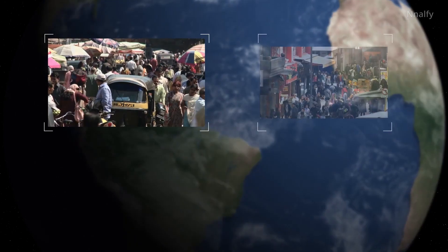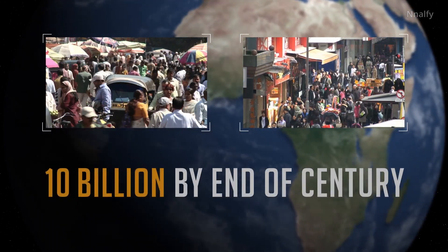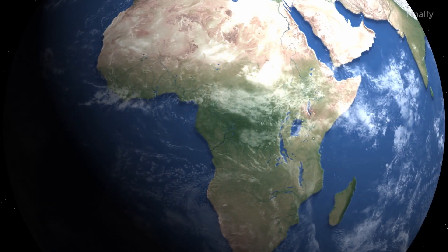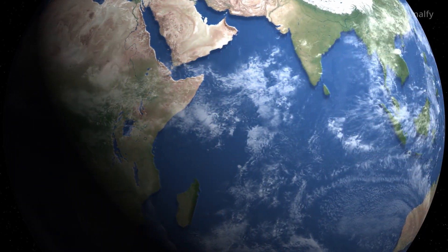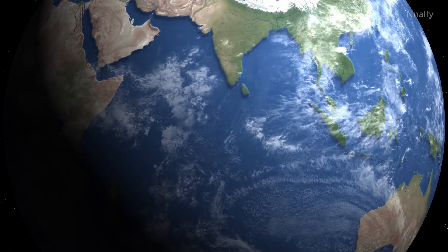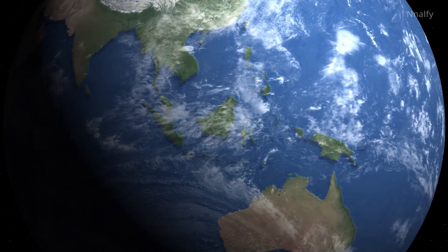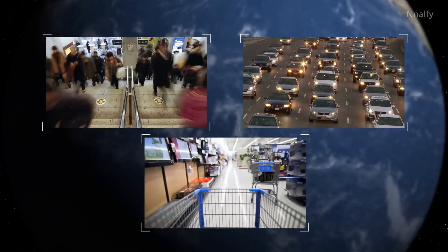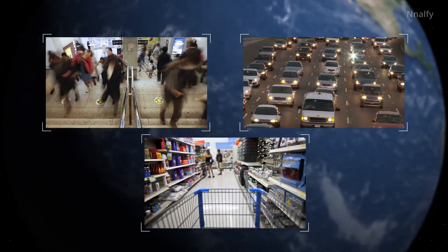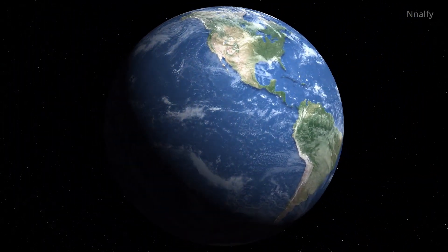Our population is expected to grow to 10 billion by the end of this century, yet the Earth's size remains the same. Slowing human population growth and lowering our use of natural resources are key to reducing the impact we have on the planet. Through the decisions we make about our lifestyles, our numbers, and our consumption, we can all help preserve the health and beauty of our home.